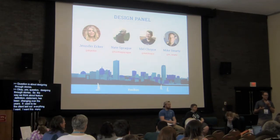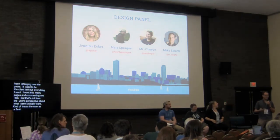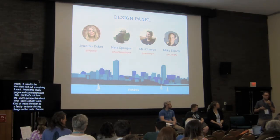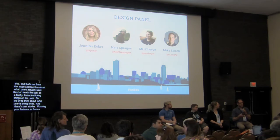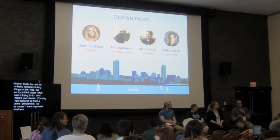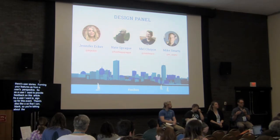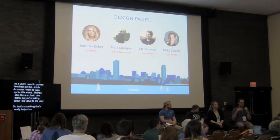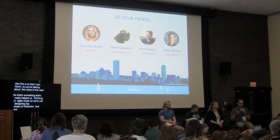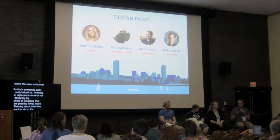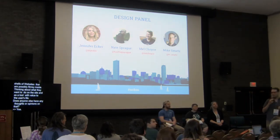The way we think about feature definition has changed. It used to be the client laying out everything they wanted — I want so many pages, I want commenting, I want this. But that's not from a user's perspective about what users actually want. We kind of treated the user as just a mushy entity clicking through the web. User stories are about framing your features from a user's perspective: 'As a user, I want to provide feedback on this article,' 'As a user, I want to sign up for this event,' plus the 'so that I can' value statement. Working more in an agile mode helps us avoid designing big shells of websites that are possibly flimsy inside, and instead think about what people are actually trying to do — thinking about the site as a tool with real value to the user's life.